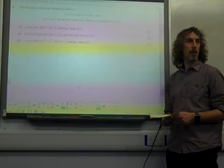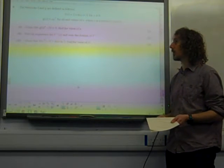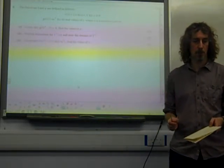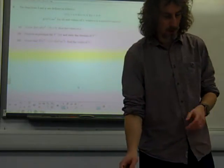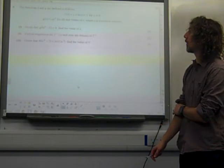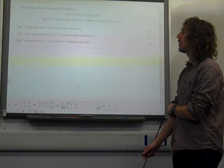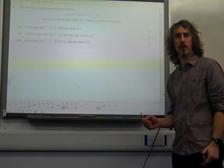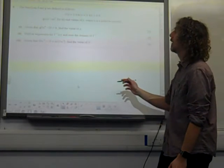Given that g of f of e to the 4 minus 3 equals 9, find the value of a. So we've got to think about what this is all about. g of f. Let's work out what g of f kind of looks like.